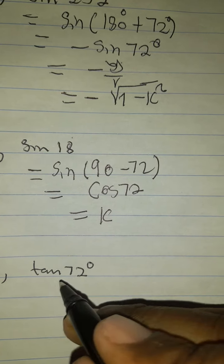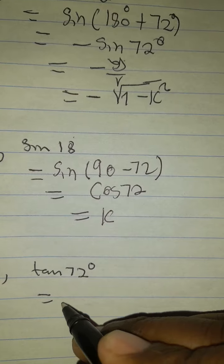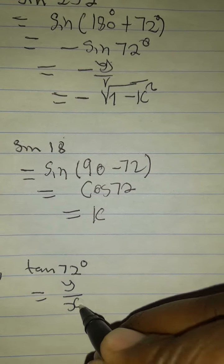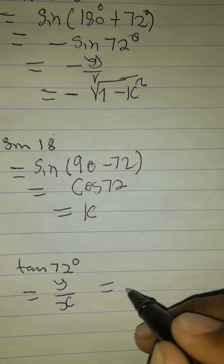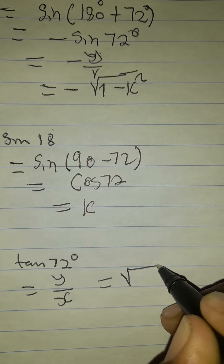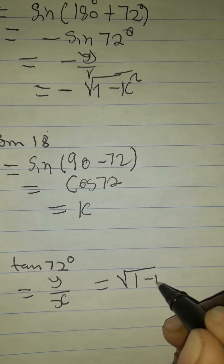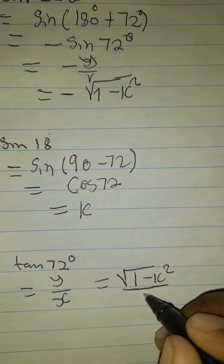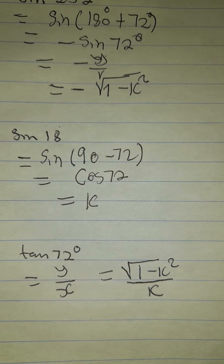Then let's work out tan 72. Already we have all the trigonometric ratios. For tan, it's y over x, which is opposite over adjacent. Our y was root 1 minus K squared. Our x was K. So that's the solution.